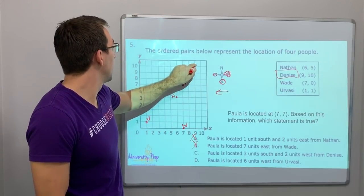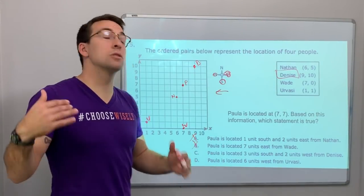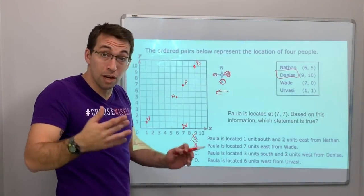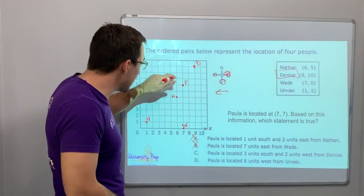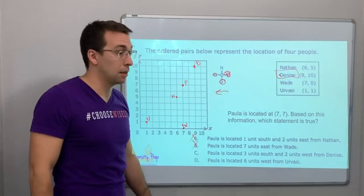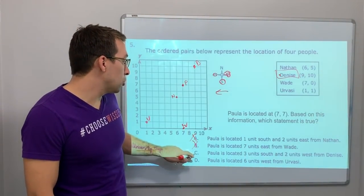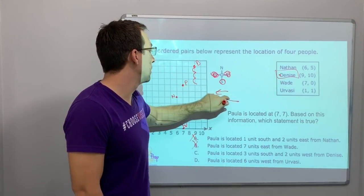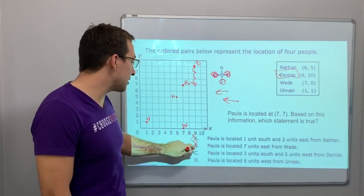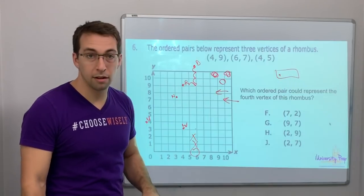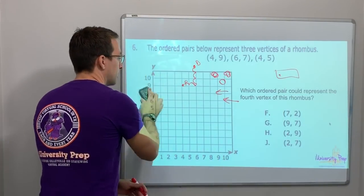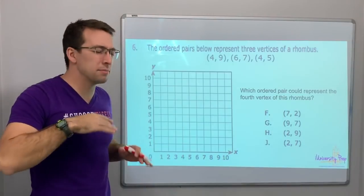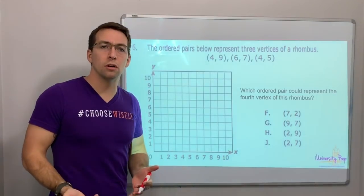I didn't write Denise down — Denise is at nine-ten. Mistakes happen — go slow, start over if you don't get your answer. The reason I'm not editing these videos is I want you to see that you can problem-solve. I found my mistake: Denise is at nine-ten. So Paula is located three units south and two units west of Denise — one, two, three south and one, two west — that is correct. C is our answer.